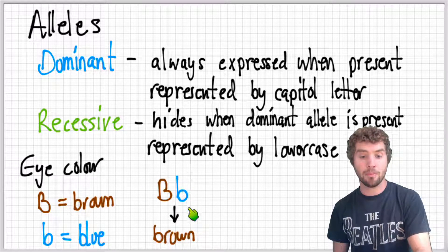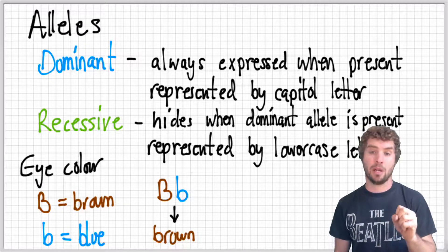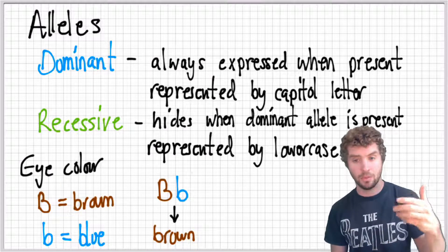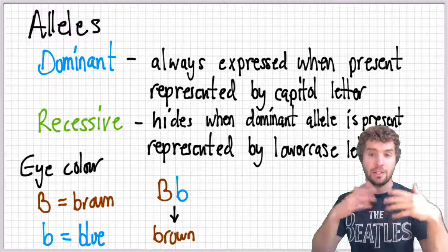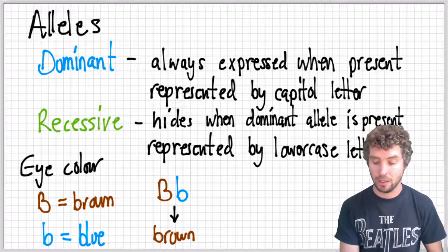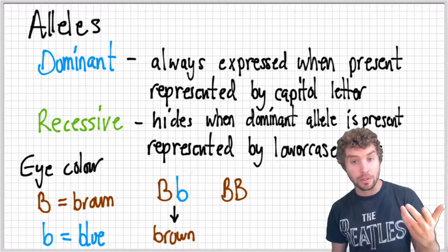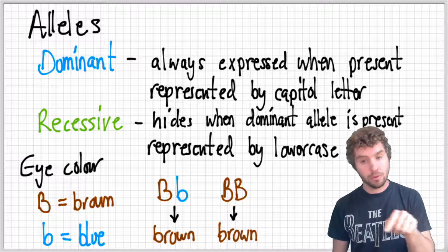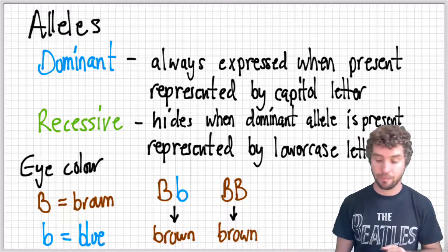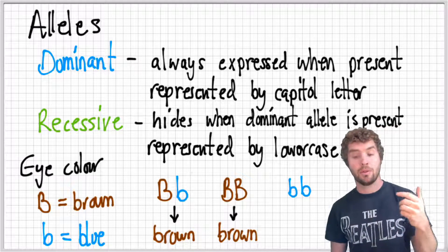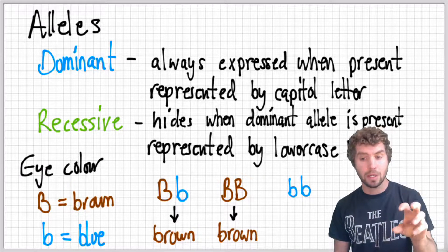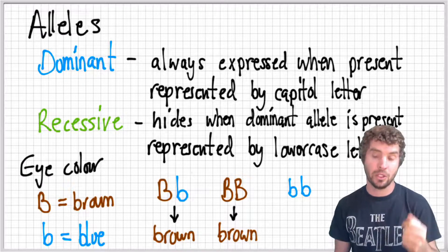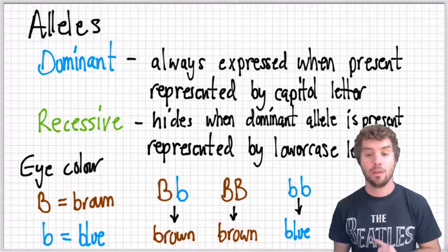Because the dominant brown gene is present, you will end up with brown eyes — that's how it expresses, that's the phenotype, the way that the trait actually physically manifests. If you have two dominant brown genes, you also have brown eyes. So there are two different ways to have brown eyes, but only one way to have blue eyes: you have to inherit the blue eye gene from both parents.